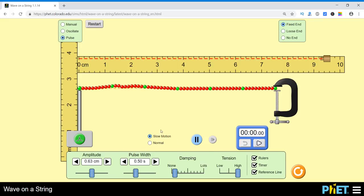In this way we can change various parameters of it by keeping it to fixed end, loose end, or no end at this side, at this right side, and changing it to manually oscillate or the pulse.